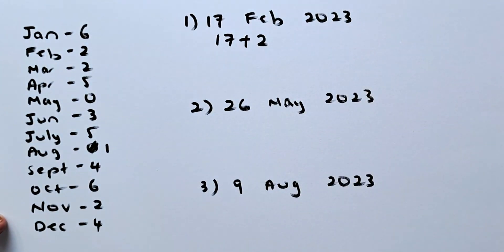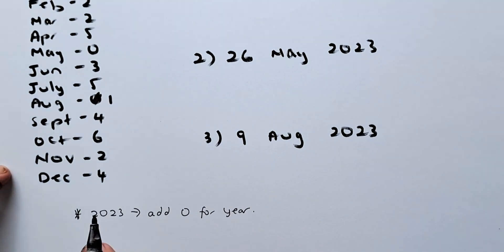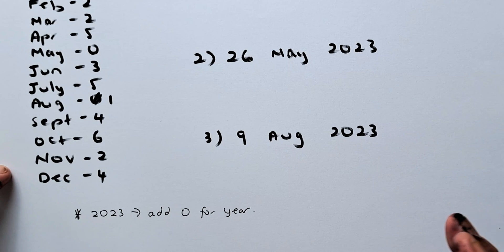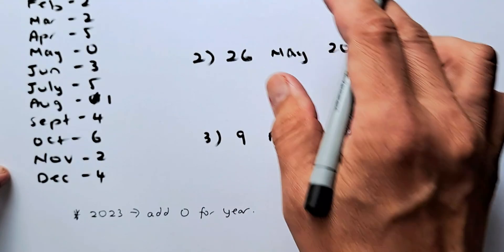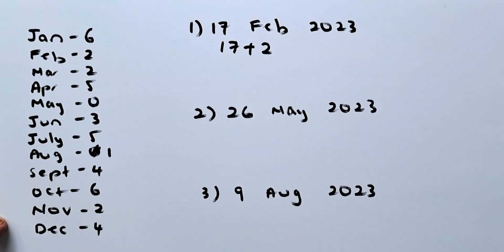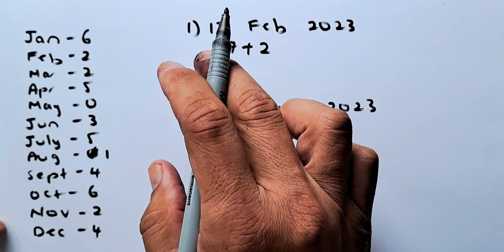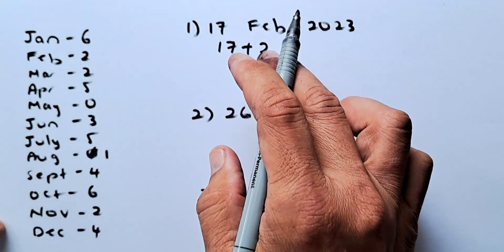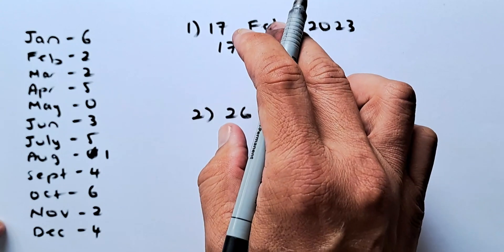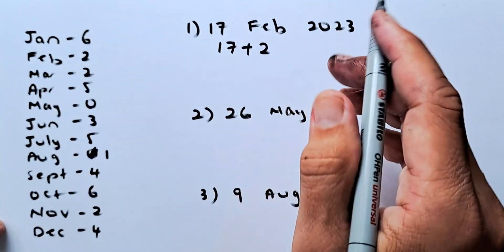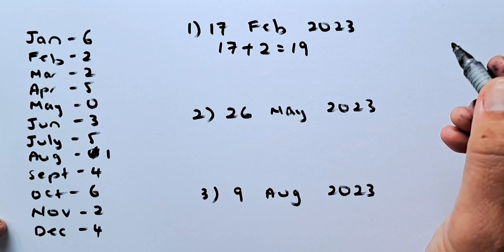For 2023, we are lucky because for 2023, we add 0 for the year. For different years, we're going to add different numbers. But for 2023, we add 0. So technically, we do not have to add the year for 2023. So we just need to add the day and the month. So day is 17, month is 2 because February is 2 and the answer is going to be 19.